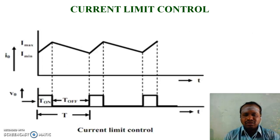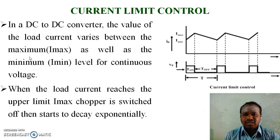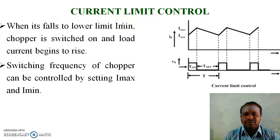Current limit control: In current limit control, the current limits are fixed. The higher limit is known as I-max and the lower limit is known as I-minimum. In a DC to DC converter, the load current varies between I-max and I-minimum for continuous voltage. When the load current reaches the upper limit I-max, the chopper is switched off and current starts to decay exponentially. When it falls to the lower limit I-minimum, the chopper is switched on and load current begins to rise. The switching frequency of the chopper can be controlled by setting I-max and I-minimum.